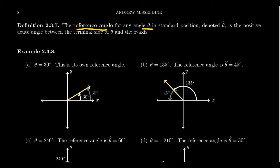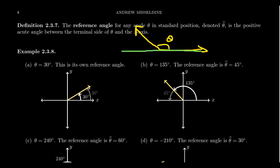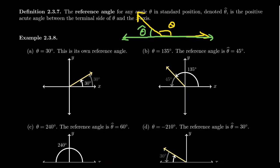The reference angle of angle theta is going to be the positive acute angle formed between the terminal side of theta and the x-axis. So if we have the initial side and then the terminal side over here — this is our angle theta — the positive x-axis would be this line right here, and the positive acute angle formed between the terminal side and the x-axis is theta hat. The reference angle is generally not the same angle as theta itself, although there are some exceptions.